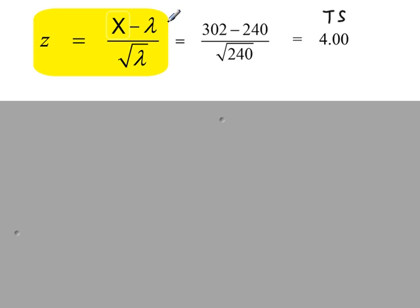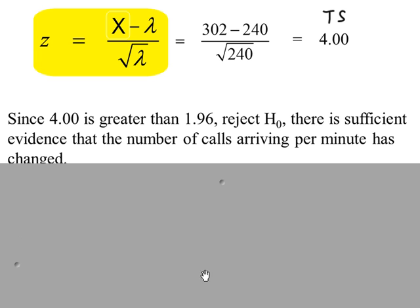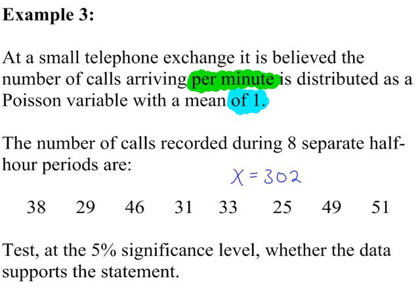The formula again for the test statistic, which is 4. That is clearly in the rejection region. 4 is greater than 1.96. So we are going to reject H0. There is sufficient evidence that the number of calls arriving per minute has changed.